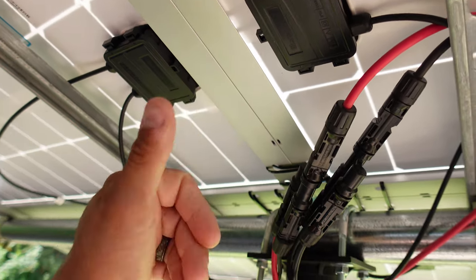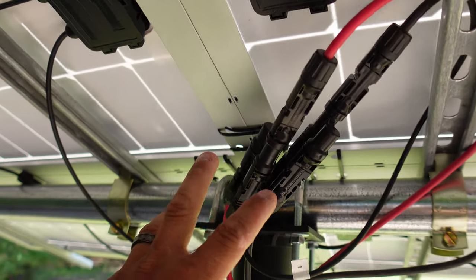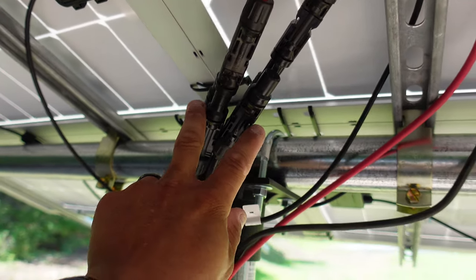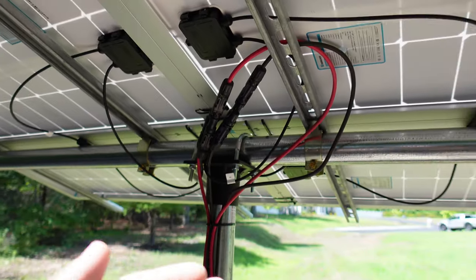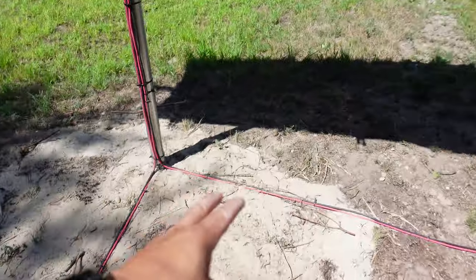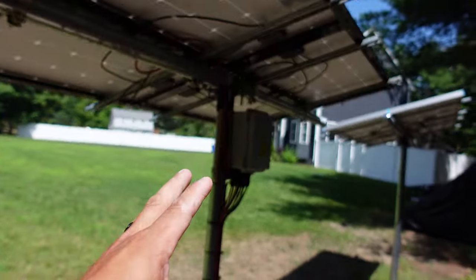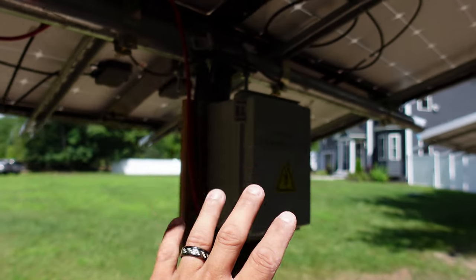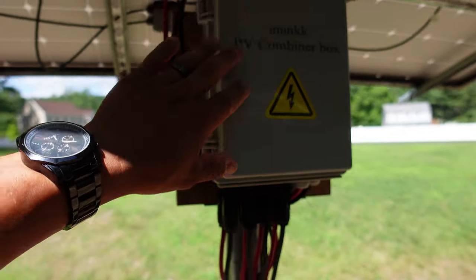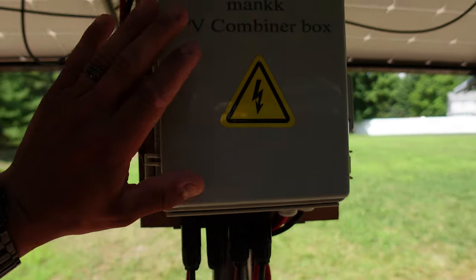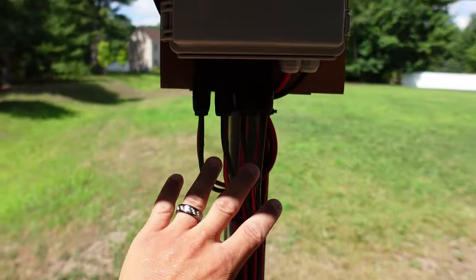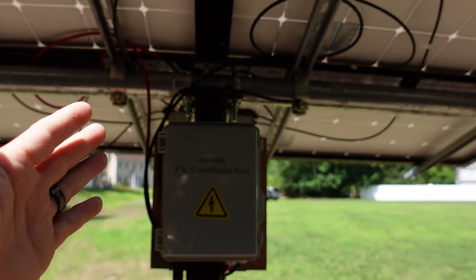We end up tying these in parallel. These panels right here are ran in series, the ones behind us are ran in series, then you stick them together to run alongside each other so they are the same voltage running over to the combiner box. You want to try to keep all of your leads right around the same voltage.